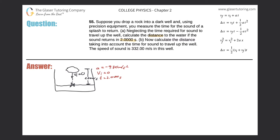We don't know the displacement, nor the final velocity when the rock hits the water. But we're looking for the distance — the displacement, x. We know the acceleration, the initial velocity, and the time, and we want to find x. The formula that relates all four of those variables is the second kinematic equation: let's write it down.